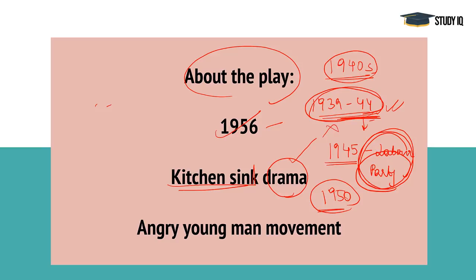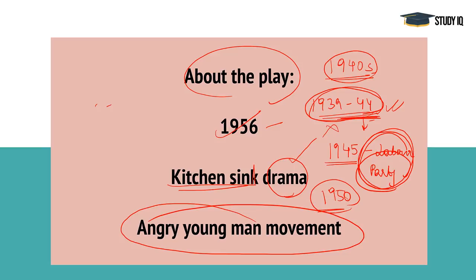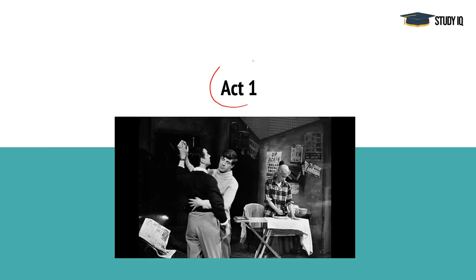When the Labour Party's term ended, people were very angry with them. The young men were very angry and dissatisfied, and they began to be called Angry Young Men. You must remember that this play represents the Angry Young Man movement, where the youth were dissatisfied because they had no opportunities. They were very angry.